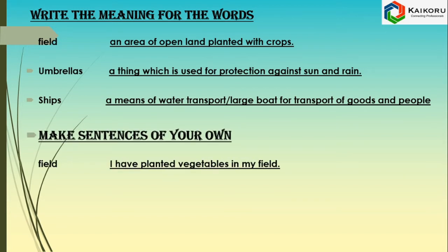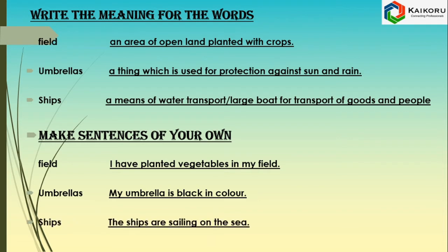Make sentences of your own. Field: I have planted vegetables in my field. Umbrella: My umbrella is black in color. Ships: The ships are sailing on the sea.